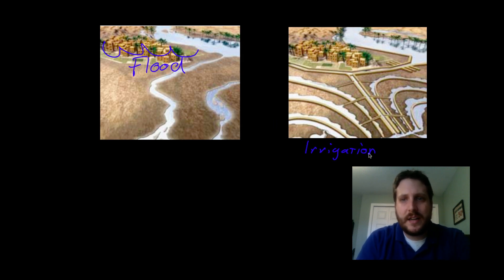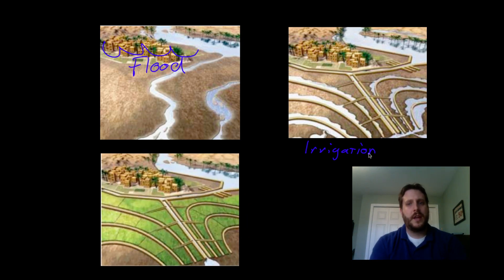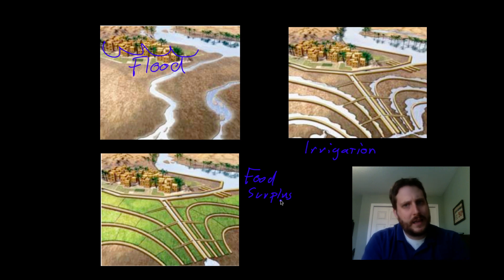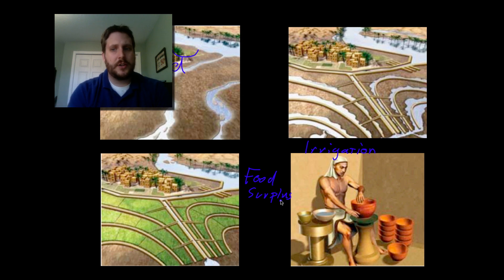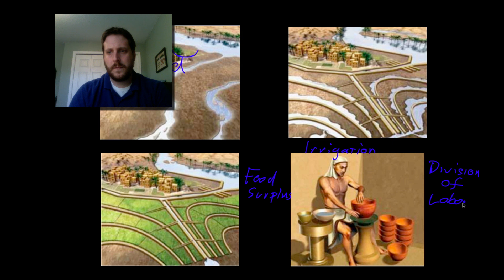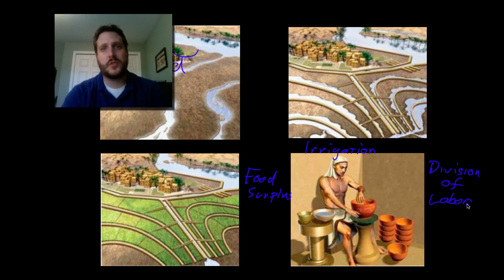Because they were so good at irrigation, they were able to improve their farming and create a food surplus. If you remember back to the agricultural revolution, once you've got a food surplus — once one person is able to grow food for multiple families — that opens up other people to do other jobs, which leads to what we called a division of labor. So different people doing different jobs: people creating pottery, people weaving, people in charge of trading with other civilizations. That's kind of how civilization started in Mesopotamia.